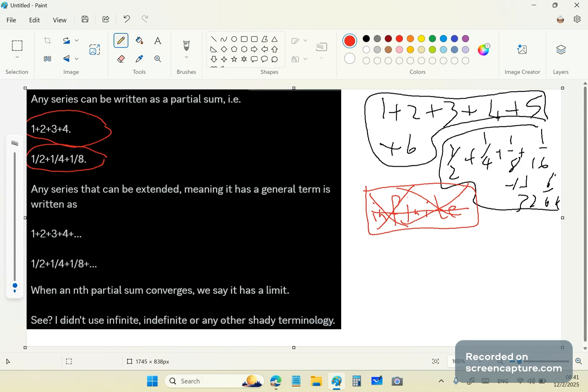Now, here comes the tricky part. When an nth partial sum converges, we say it has a limit. We, meaning I, John Gabriel, not your mainstream professors. They're a bunch of morons. When an nth partial sum converges, we say it has a limit.